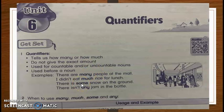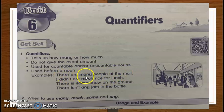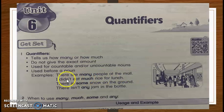Let's look at the first example: there are many people at the mall. Many hanya untuk countable nouns — nouns yang boleh dikira. People boleh dikira, so there are many people at the mall. If I said 'there are much people at the mall' — it is wrong, salah. Second example: I did not eat much rice for lunch. Rice — can you count rice? No, cannot. Rice is uncountable nouns, so the quantifier must be 'much'.